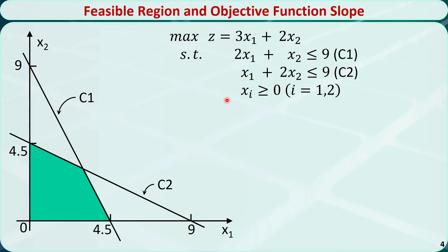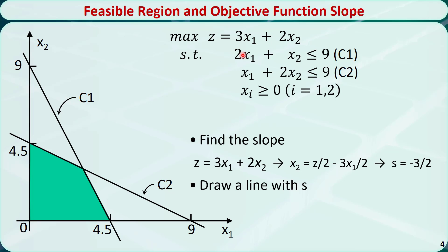For example, this is a maximization problem with two variables. The feasible region is the shaded area. To find the slope of the objective function, we rewrite it so that x2 equals z over 2 minus 3x1 over 2, so the slope is negative 3 over 2. We draw any line that has slope s and intersects with the feasible region.